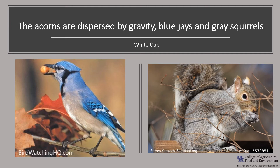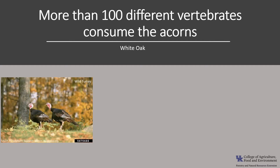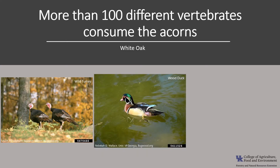Wind and gravity aid in the dispersal of acorns. Wildlife are also responsible for acorn dispersal, including blue jays and gray squirrels, both effective in dispersing the seed a distance from the parent tree. Acorns are an important wildlife food and are consumed by more than a hundred different vertebrates, including birds such as wild turkey, blue jays, northern bobwhite, the wood duck, and ruffed grouse.